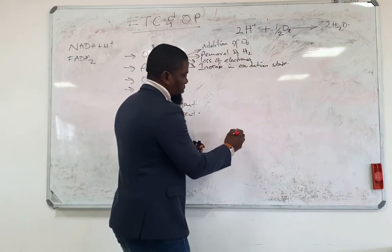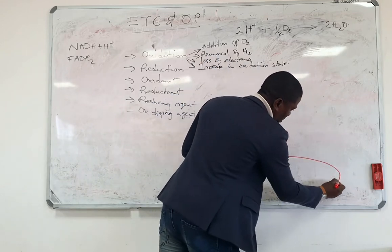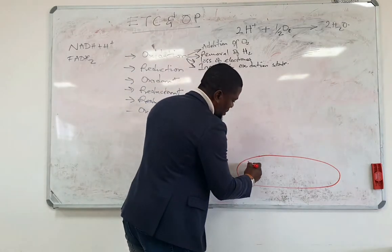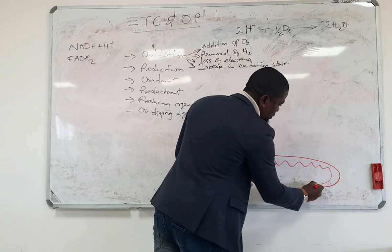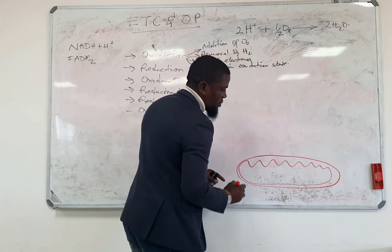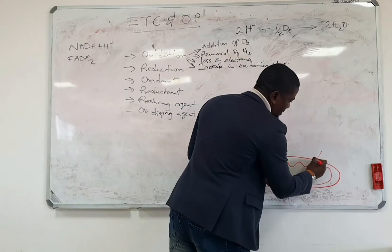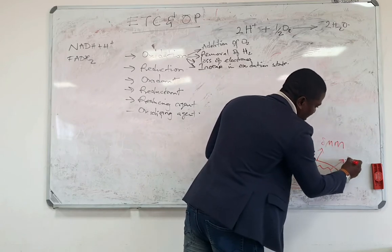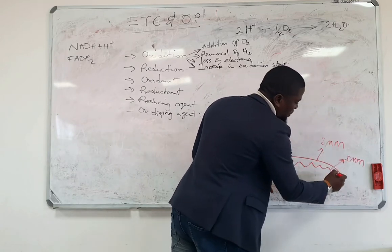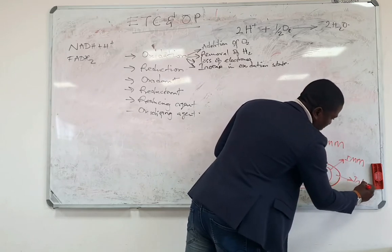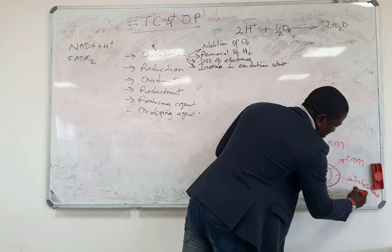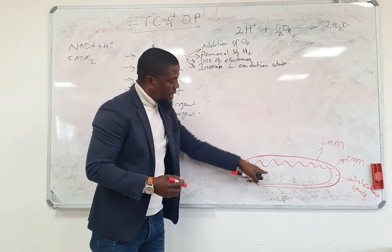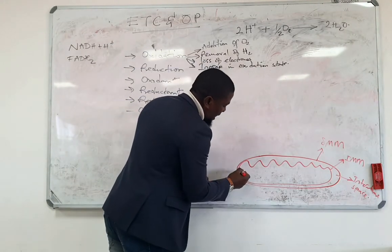The mitochondria has a special structure. It has an outer mitochondrial membrane and an inner mitochondrial membrane. This here is the outer mitochondrial membrane; this is the inner mitochondrial membrane. The space between them is the intermembrane space. Inside the mitochondria, you have a gel-like substance which we refer to as the matrix.